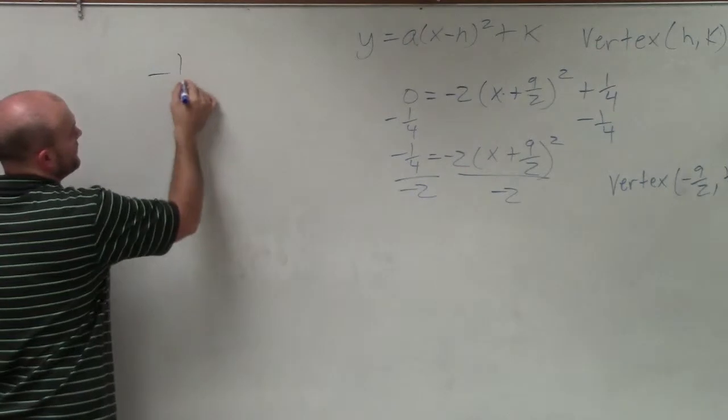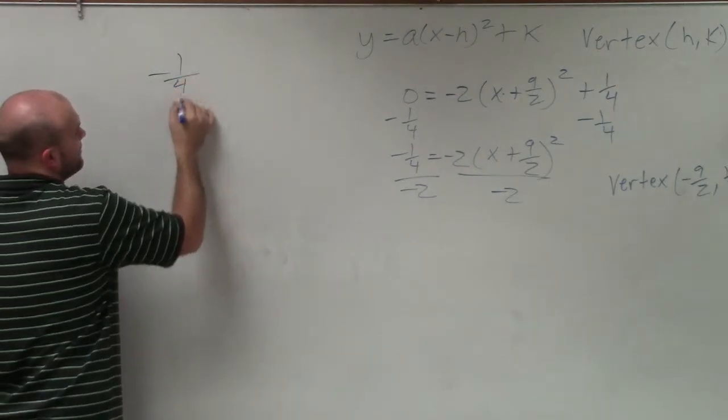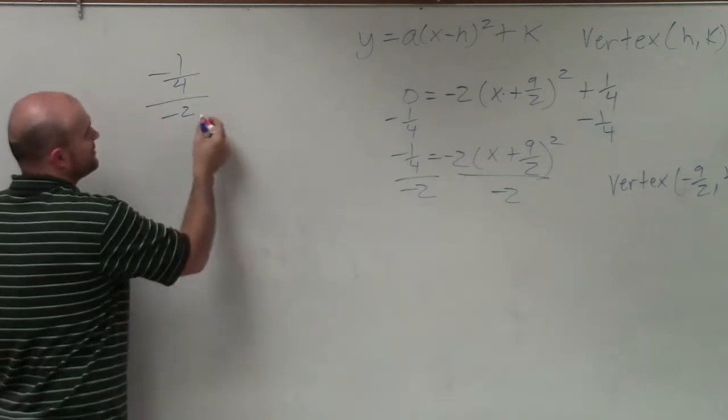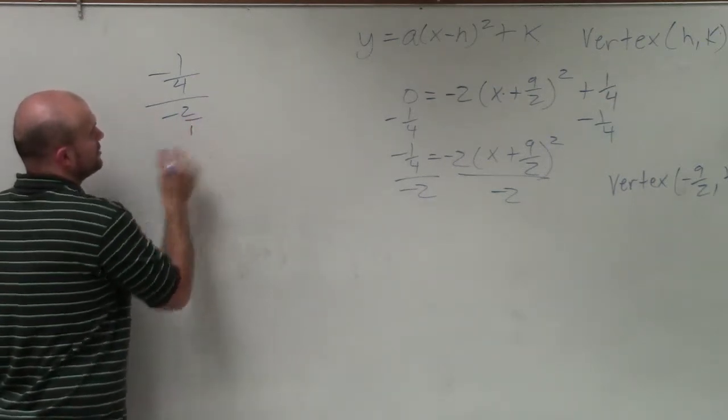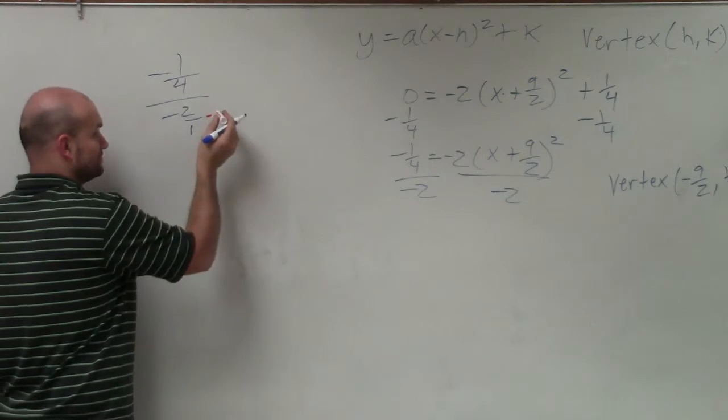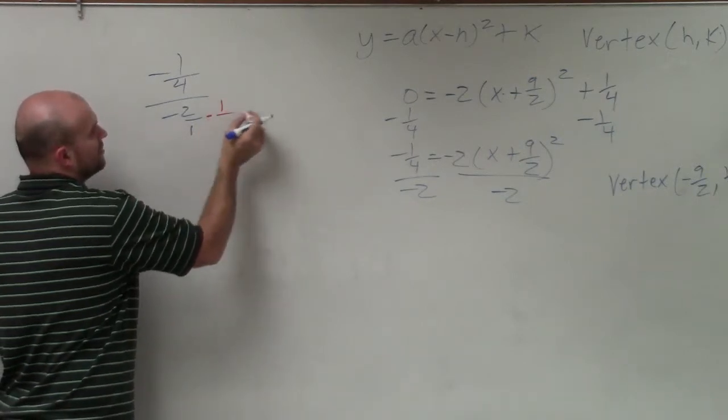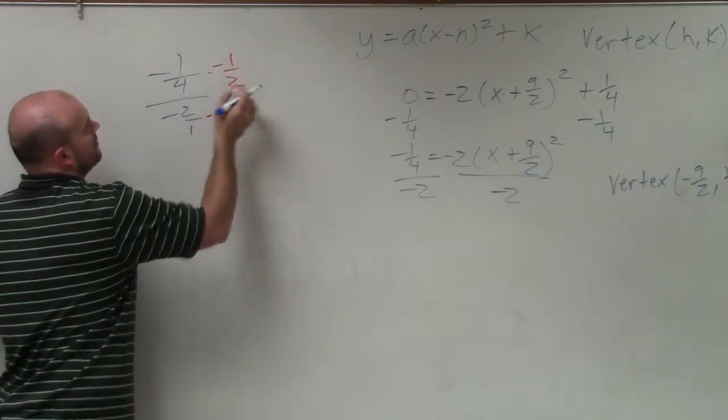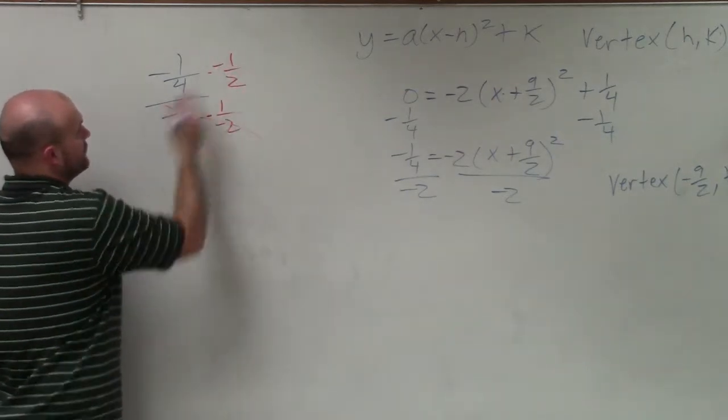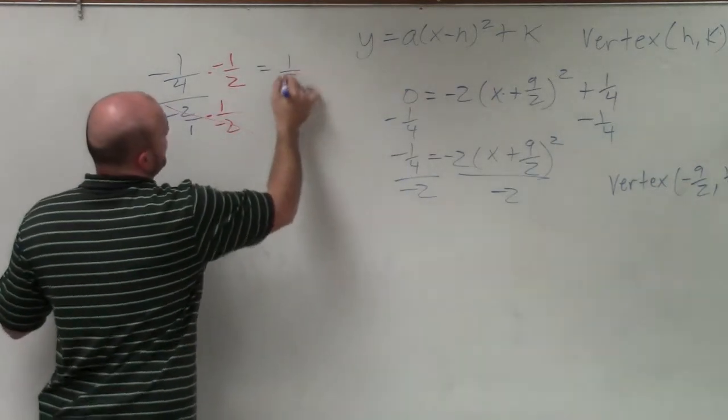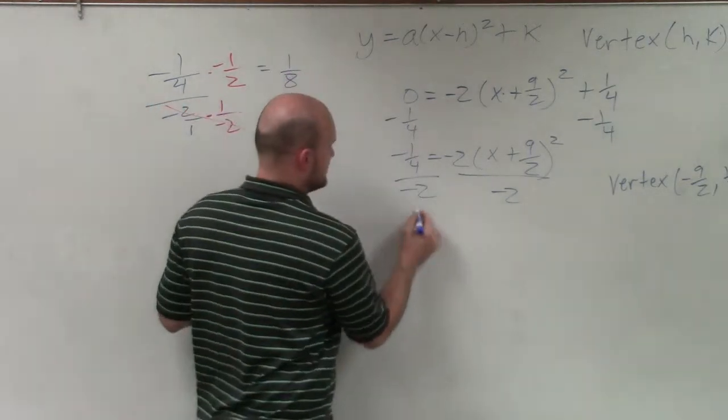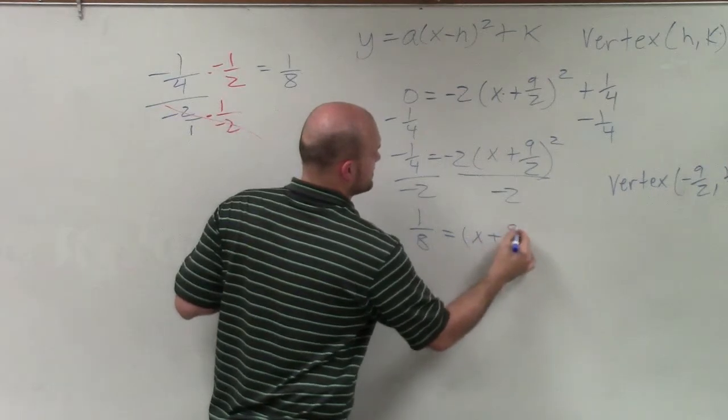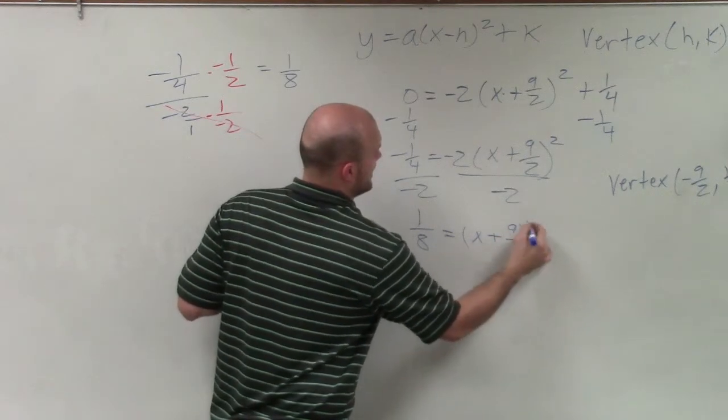And let's go ahead and do this fun stuff over here. So if I have negative 1 fourth divided by negative 2, a lot of times what I like to do is just multiply by the reciprocal. That's really 2 over 1, right? So to multiply by the reciprocal would be 1 half. That multiplies the positive 1. This becomes a positive 1 eighth. So now this reduces down to 1 eighth equals x plus 9 halves squared.